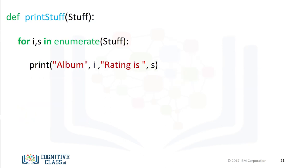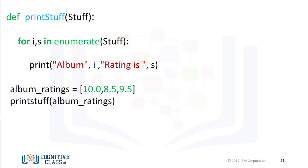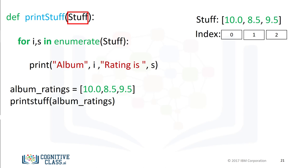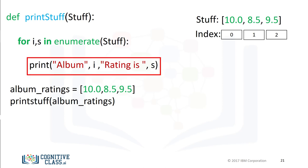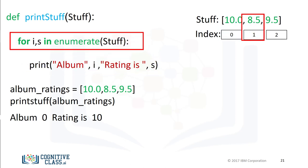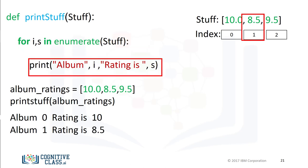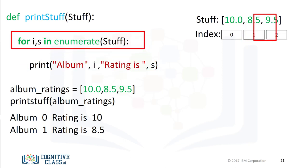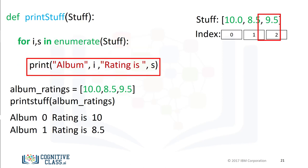We can use loops in functions. This function prints out the values and indexes of a list or tuple. We call the function with the list album_ratings as an input. The list is displayed with its corresponding index. The variable stuff is used as an input to the function enumerate, which passes the index to i and the value in the list to s. The function iterates through the loop, printing each index and its corresponding value until the final values in the list are printed out.